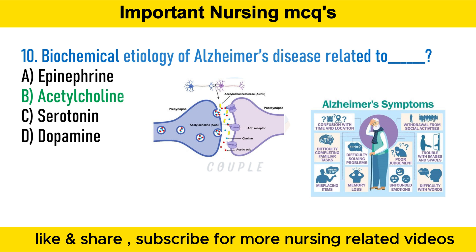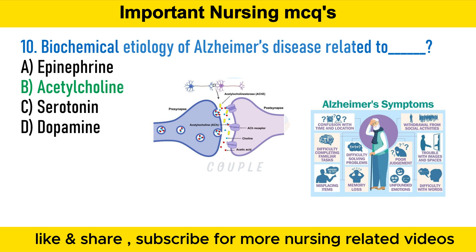Alzheimer's disease involves parts of the brain that control thought, memory, and language, and is the most common type of dementia. Levels of the neurotransmitter acetylcholine are particularly low in the brains of people with Alzheimer's disease. Acetylcholine plays a role in memory and muscle contractions. Cholinesterase inhibitors are used to treat Alzheimer's disease and myasthenia gravis by inhibiting the enzymes that degrade acetylcholine, increasing its availability to stimulate receptors within the brain.